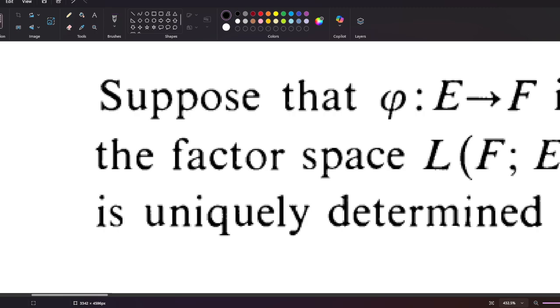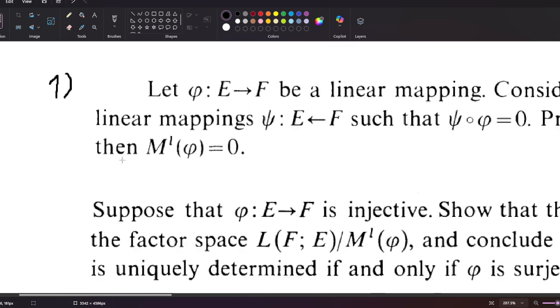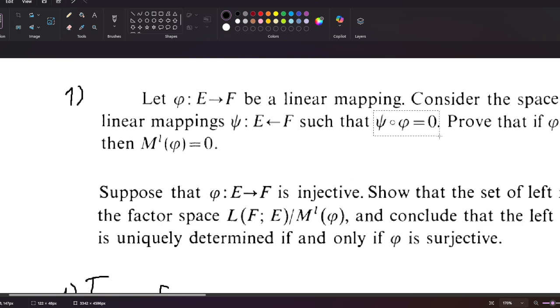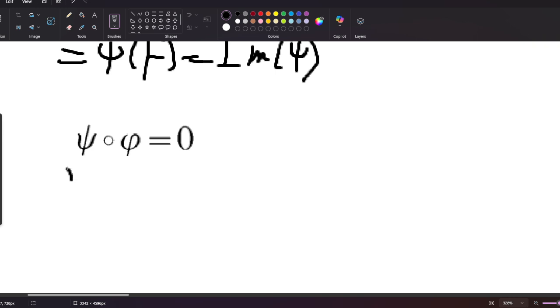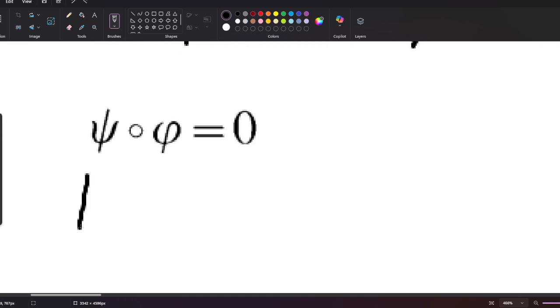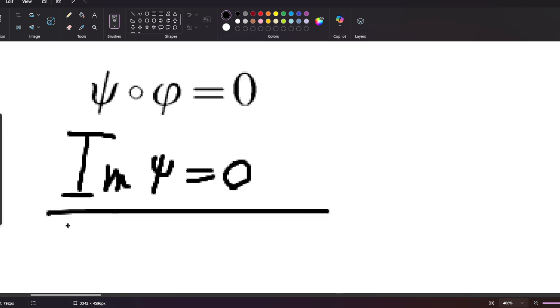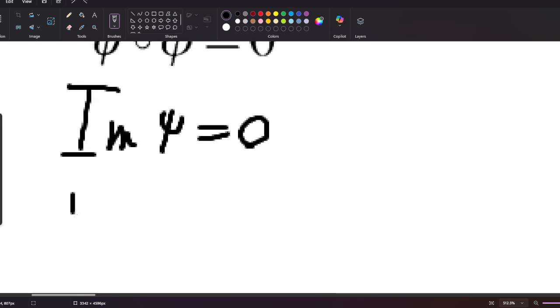Let's review this equality. Taking the image on both sides, we have image of psi equals zero, because the image of zero is zero. Since the image of psi is zero, then psi is the zero mapping.